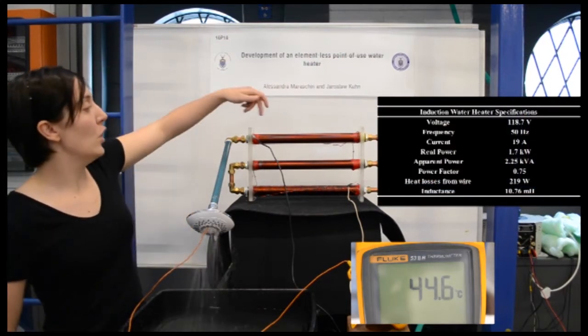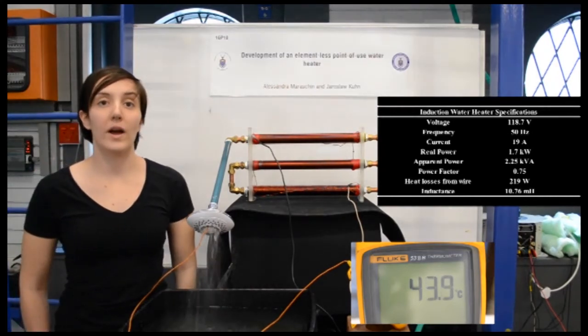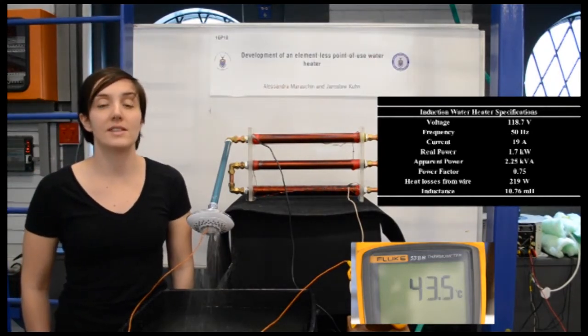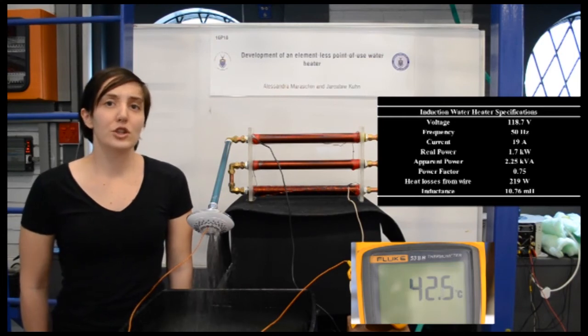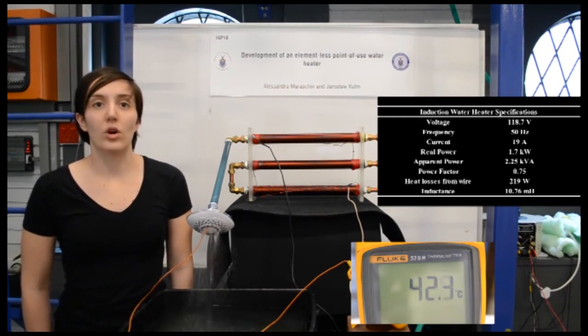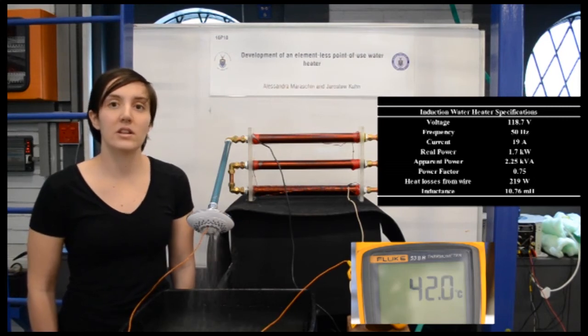Looking at the system here, we have a three coil setup with 1.8 mm diameter copper wire, with a total inductance of 10.76 millihenries. We are running at about 118 volts, 50 hertz and 19 amps. The heat losses produced by the wire is about 219 watts, which suggests that the majority of the heating process is actually done by hysteresis losses and eddy currents.